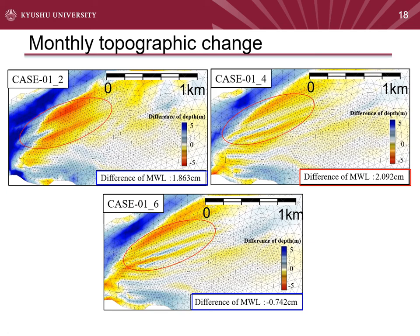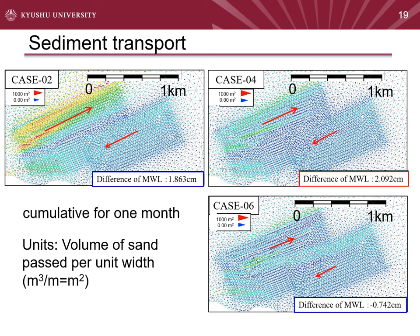This is the distribution of bed load transport vectors. In each case, there is sediment transport toward the east, which is the north side of the Tanora area, and there is sediment transport toward the west and south. The areas where sand waves are developed lie on the border between these transport directions.